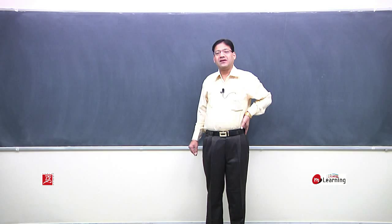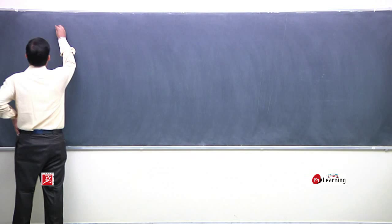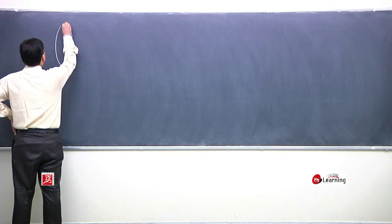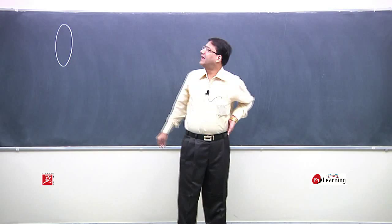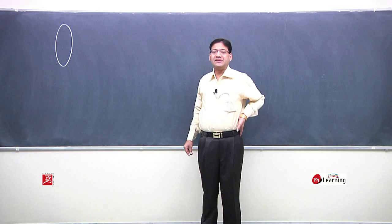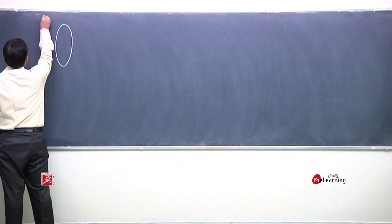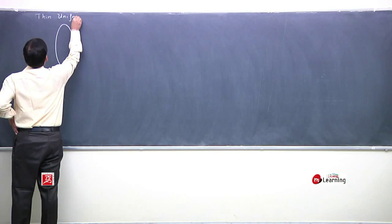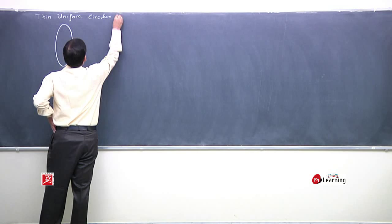The first mass system is the point mass. The gravitational potential expression for point mass we've covered. The second mass system is if we have got a thin, uniform, circular ring.